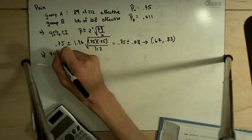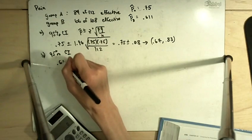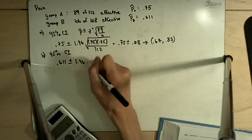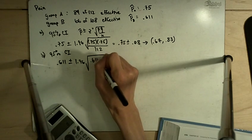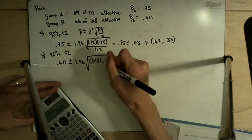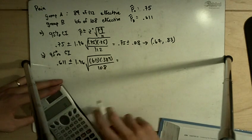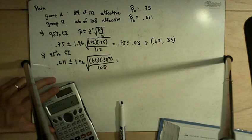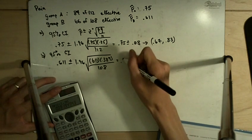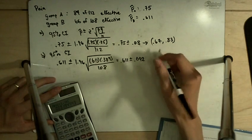For medication B, we're going to make another 95% confidence interval, this time centered at 0.611 plus or minus 1.96 times the square root of 0.611 times 1 minus 0.611, 0.389 divided by 108. So I have 0.611 times 0.389 divided by 108. Square root of that times 1.96. I have 0.611 plus or minus 0.092.